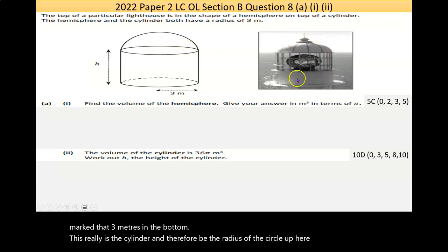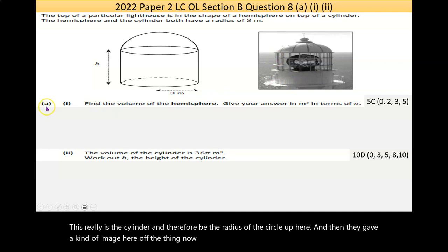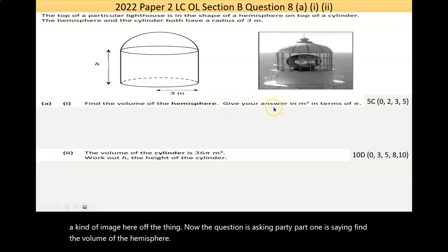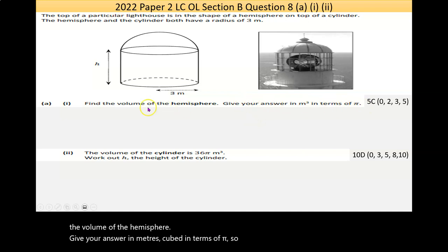They give an image here of the thing. Now the question is actually asked in Part A, Part 1, is saying, find the volume of the hemisphere, give your answer in meters cubed in terms of pi. So don't need to worry about that too much. The important information here is that they are mentioning volume.